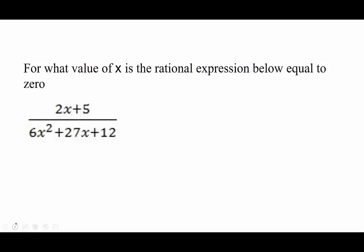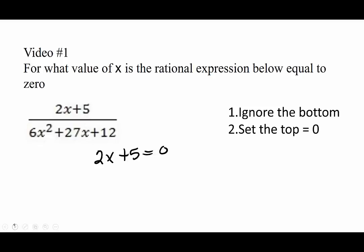Number 1, for what value of x is the rational expression equal to 0? So if it's going to be equal to 0, we completely ignore the bottom and we set the top equal to 0. Next, we solve for x, and we get x is equal to negative 5 over 2.